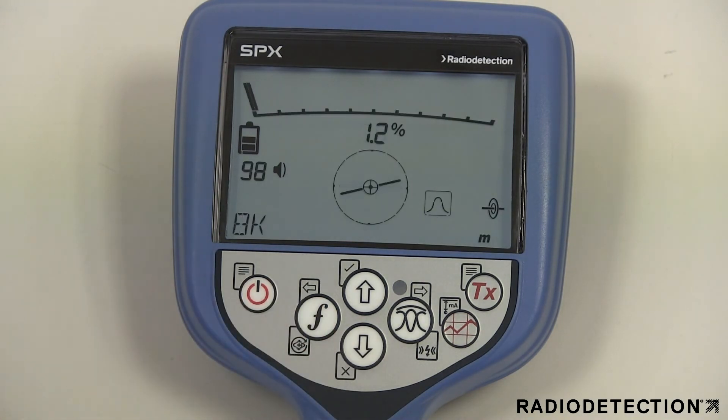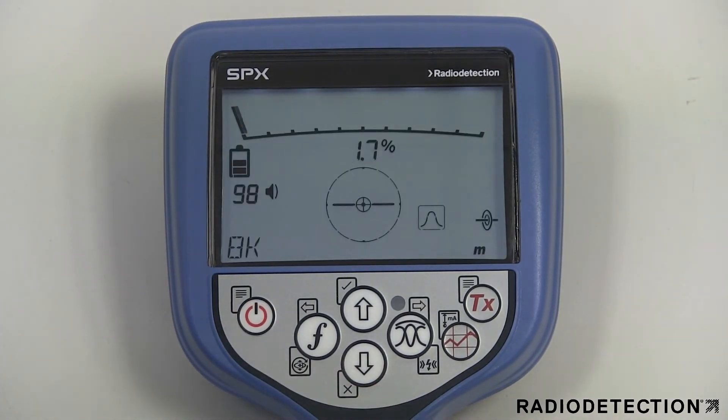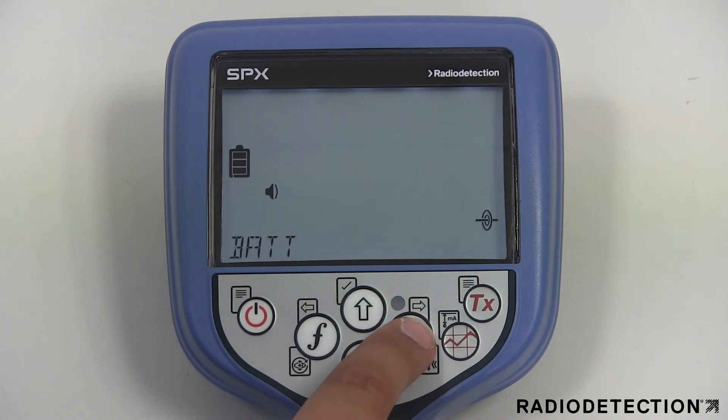You should set the locator battery type to match the currently installed battery option to ensure optimal performance and correct battery level indication. If you are using the optional lithium-ion battery pack, the locator will automatically select the correct battery type.